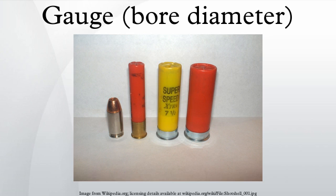Gauge is abbreviated GA, GAR, or G. The space between the number and the abbreviation is often left out, as in 12GA.